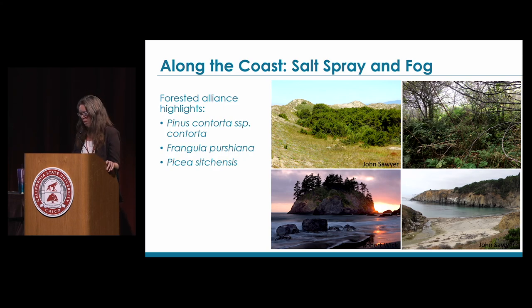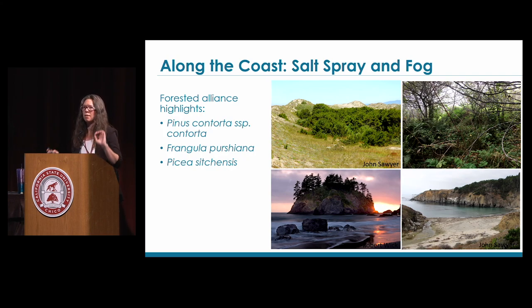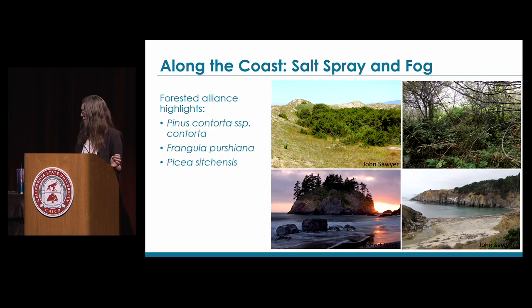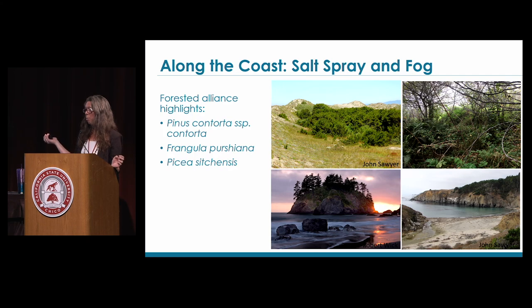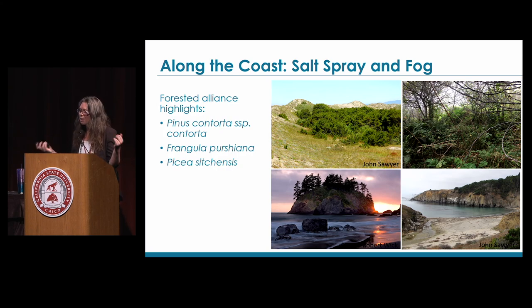Getting into some of these new types: we have sampled a number of Pinus contorta subspecies contorta, or shore pine stands — 19 stands in total. There will likely be new associations as a result of this sampling, found in interdunal areas and stabilized back dunes. Cascara buckthorn is a new association for the state, found along coastal bluffs with six samples, typically co-occurring with silk tassel bush, Pacific blackberry, and ocean spray. We also sampled a lot of Picea, and I'll go into detail on a new wetland alliance. We have over 300 samples of redwood stands, and I look forward to presenting a thorough examination of redwood associations in the future.